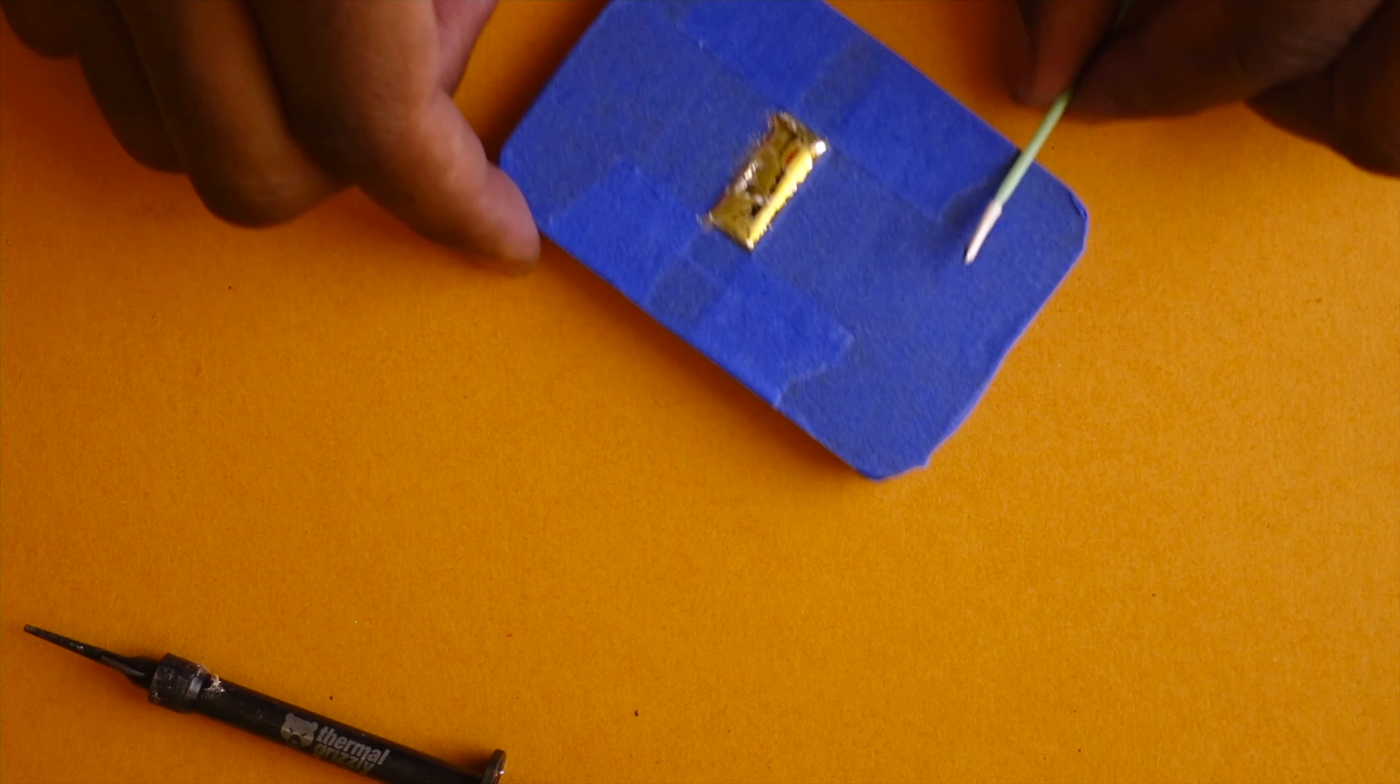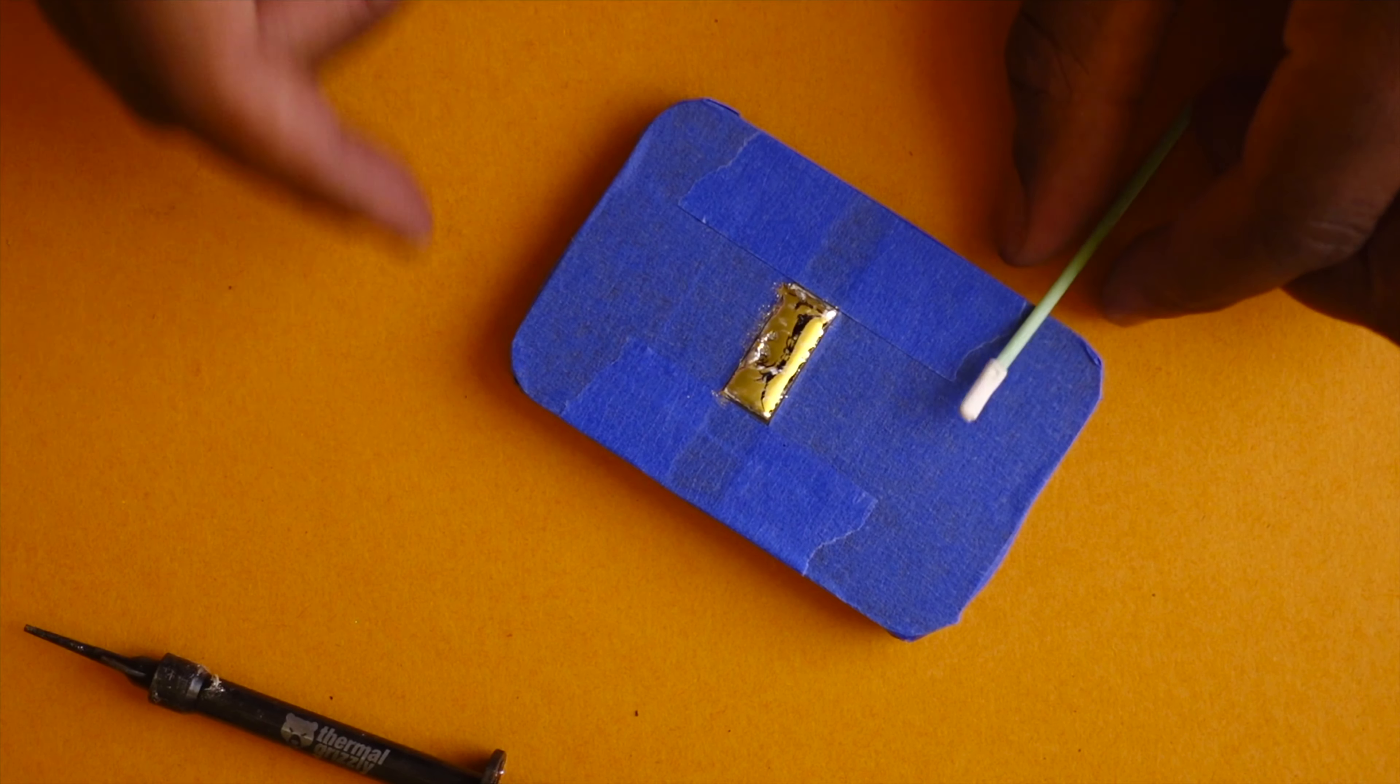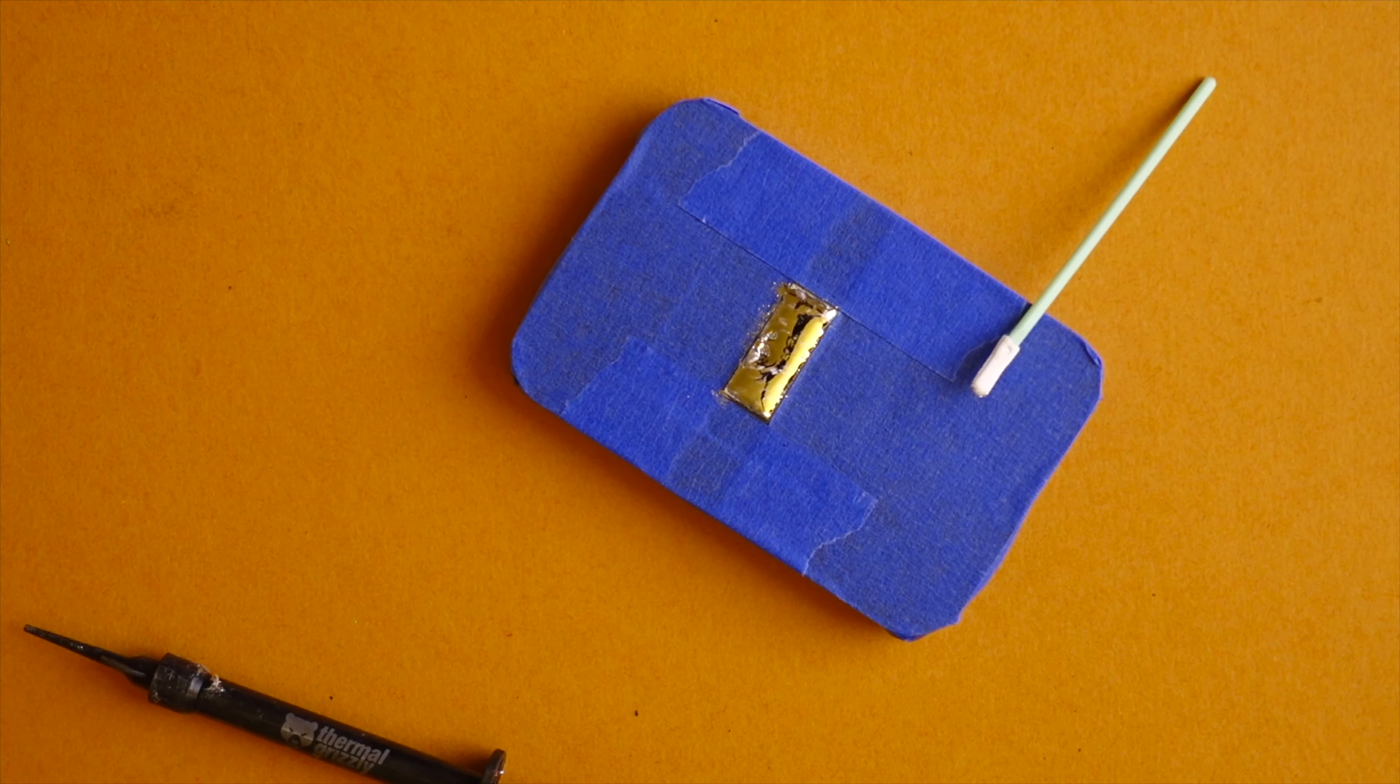Okay, so now I have the Quicksilver all over the die and what I'm going to do is I'm going to let this sit for about 15 minutes. I'm going to come back and agitate it and I'm going to do that every 15 minutes for about an hour. And then what we're going to do is we're going to wipe off all the Quicksilver and see what we've got left on the CPU die.